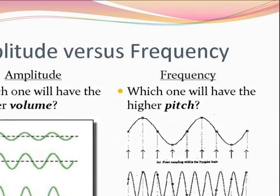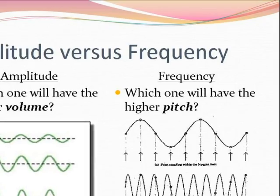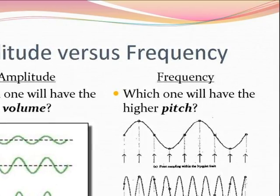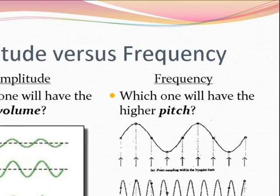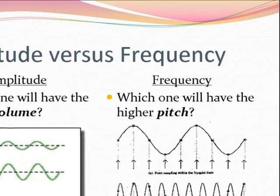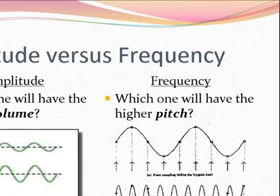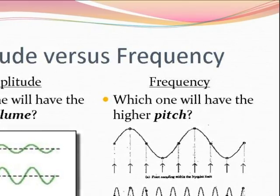Frequency, on the other hand, describes the number of waves that pass a point each second. The more waves that pass, the higher the frequency. A wave with a high frequency will have a high pitch. A wave with a low frequency will have a low pitch.